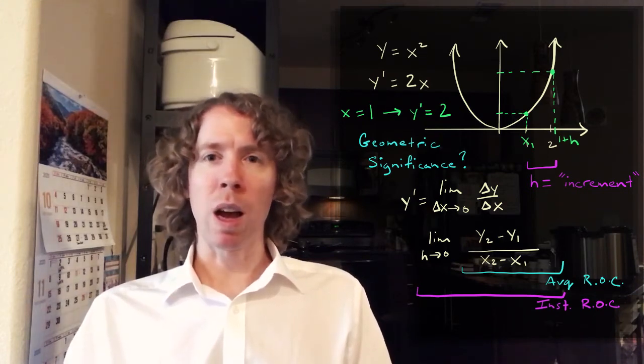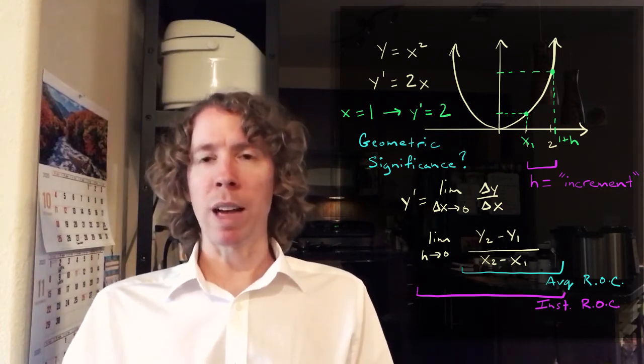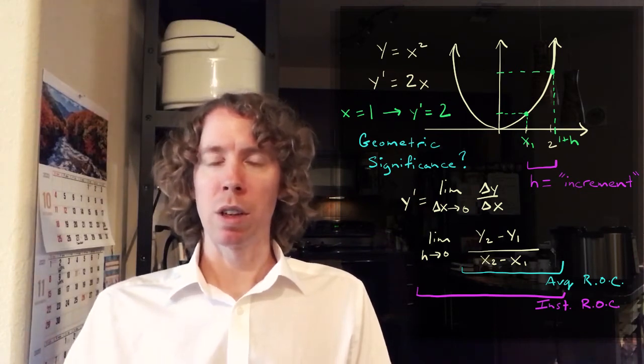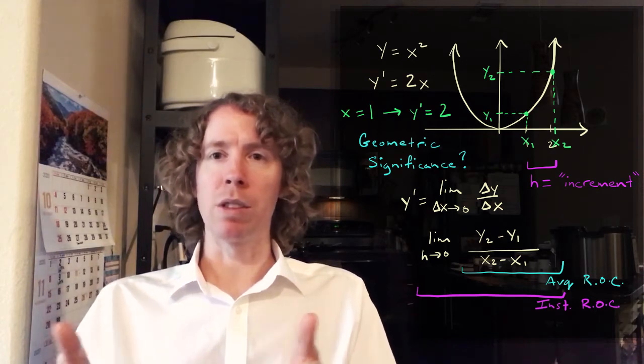It's the slope of the line that goes through those two points. So we don't actually have to use X equals one and X equals one plus H. Let's just say we're at X1 and then X2.